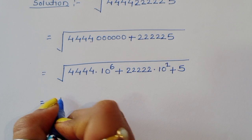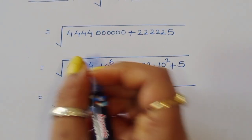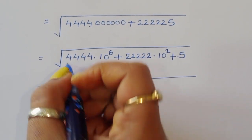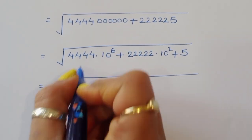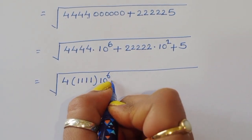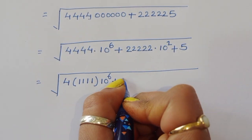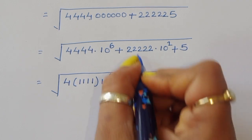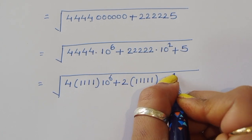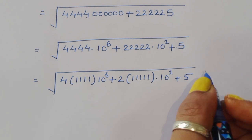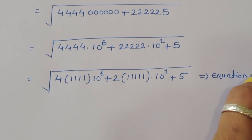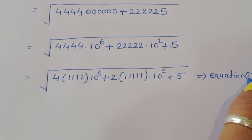Now we can factor: taking 4 common leaves us with 4 times 11111 times 10^6, and taking 2 common from the second part leaves 2 times 11111 times 10^1, plus 5. Let's call this equation number 1.